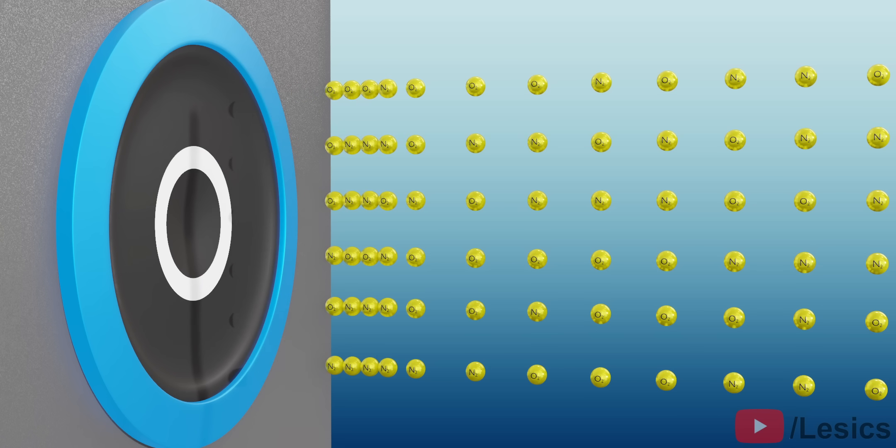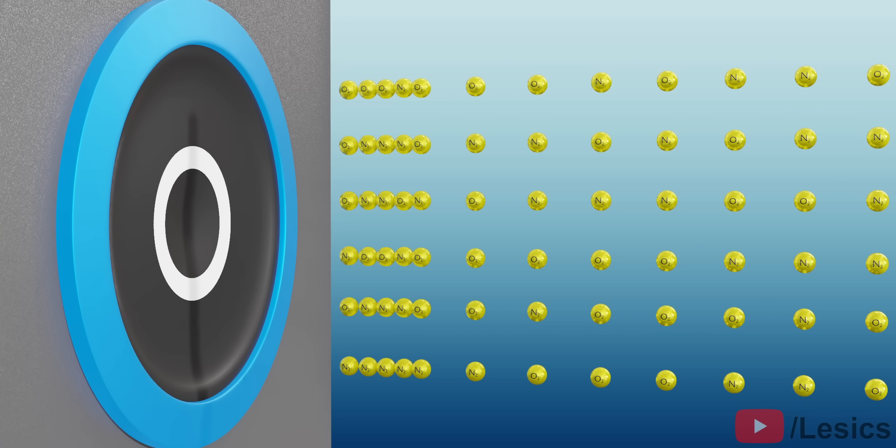However, the air is elastic in nature. This means it always wants to come back to its original position. Due to this, after traveling some distance towards the right, the first layer of air particles comes back to its original position.